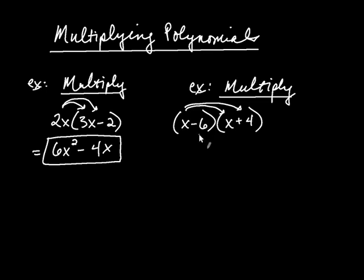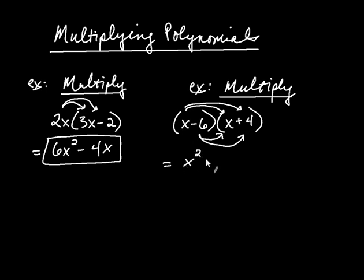Then we're going to go on with the negative 6: negative 6 times x, and negative 6 times 4. So, x times x is x squared. Then x times positive 4 is positive 4x. Negative 6 times x is negative 6x, written as minus 6x. And negative 6 times positive 4 is negative 24.